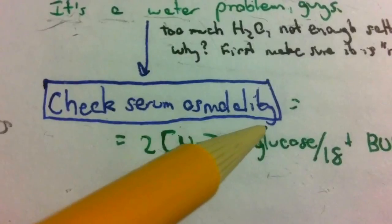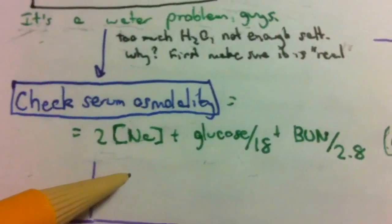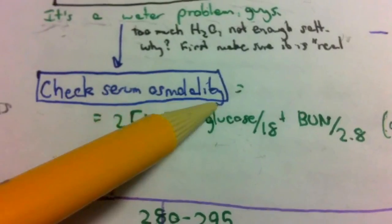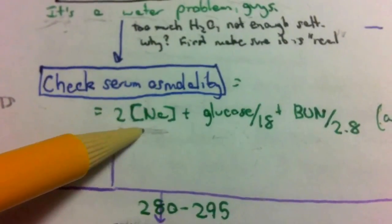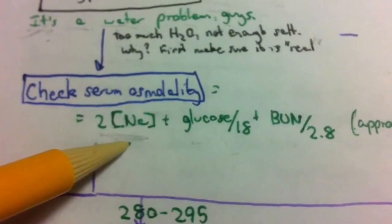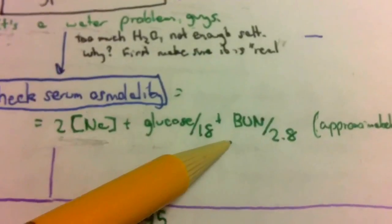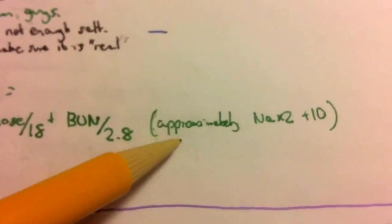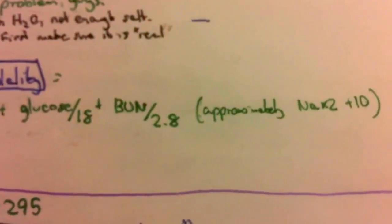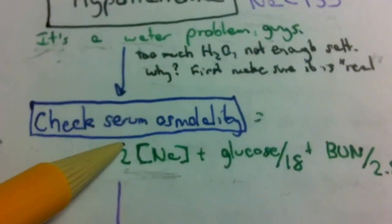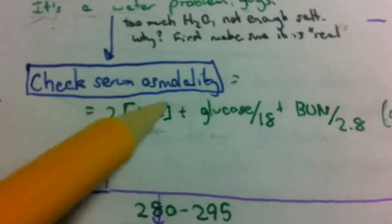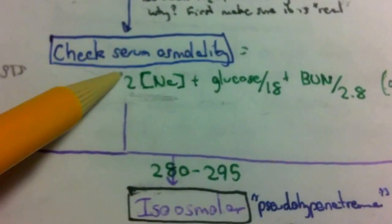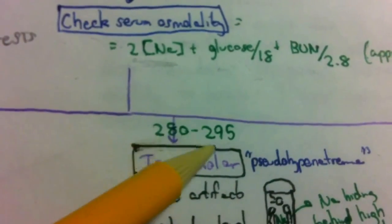I'll use osmolality and osmolarity interchangeably. Osmolality is primarily determined by sodium and represents substances that cause the movement of water. The formula is: 2 times sodium, plus glucose over 18, plus BUN divided by 2.8. An approximation is double sodium plus 10. In practice, we measure osmolality in the lab, which gives us either normal (280-295), hyposmolar (less than 280), or hyperosmolar (greater than 295).